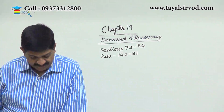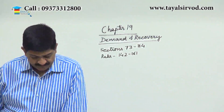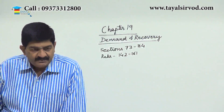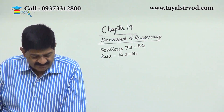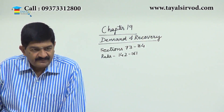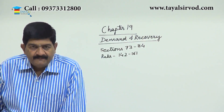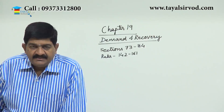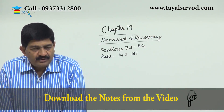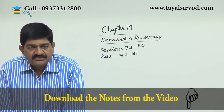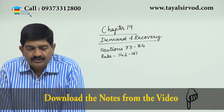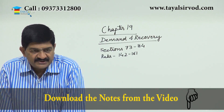Today's chapter is Chapter 19, titled 'Demands and Recoveries.' This covers sections 73 to 84 and also the rules starting from Rule 142 to 161.